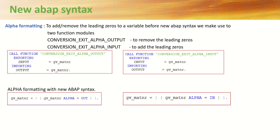The next topic we'll learn in new ABAP syntax is alpha formatting. Before ABAP 7.4, to add or remove the leading zeros from a variable, we make use of two function modules: conversion_exit_alpha_output to remove the leading zeros, and conversion_exit_alpha_input to add the leading zeros.